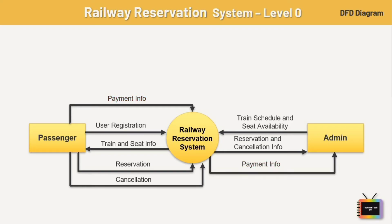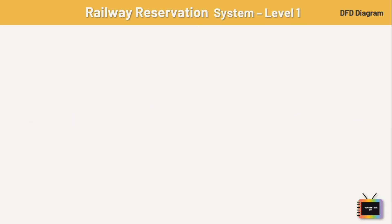Now let's see the level 1 DFD diagram. The first level of the DFD shows more emphasis on the concept of the context diagram. This level is considered the expanded version of the previous diagram. Here I am adding four processes.